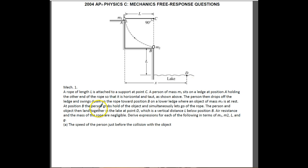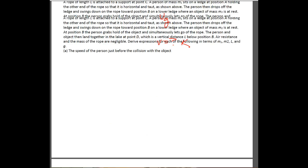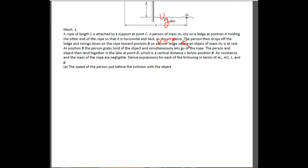The first thing they want us to do is find the speed of the person just before the collision with the object — so the speed right at the bottom of the swing. If you think about it, it's just a pendulum. At the top you have potential energy, and down at the bottom you have kinetic energy. Because this is a conservative situation with no loss due to friction, we can use conservation of energy.